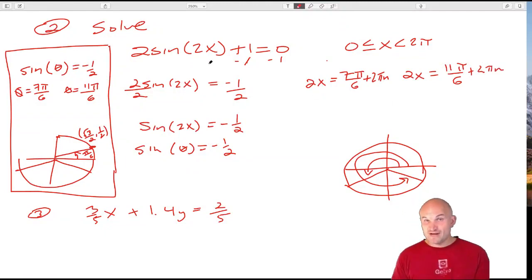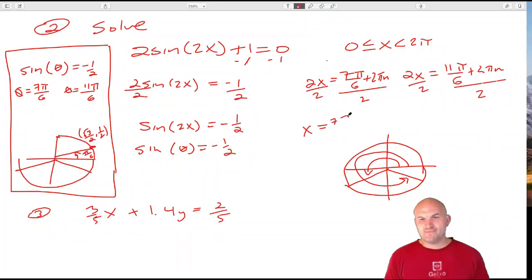But now again, we're trying to solve for x. So we're going to divide by 2. And just remember, when you divide by 2, you're dividing everything by 2. So x = 7π/12 + πn. And this would be x = 11π/12 + πn.